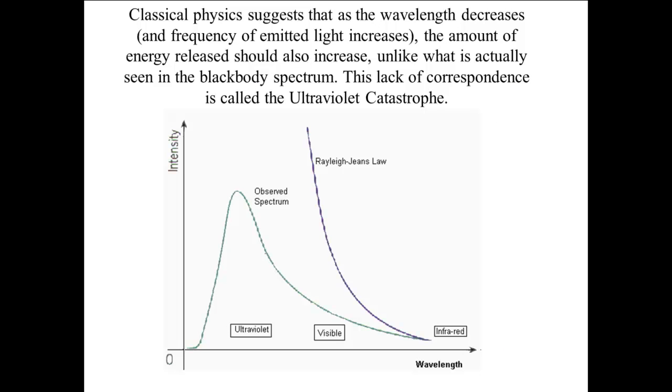Classical physics suggests that as the wavelength decreases and the frequency of emitted light increases, the amount of energy released should also increase. This is the graph labeled Rayleigh-Jeans law. Notice that at higher frequencies and energies, the Rayleigh-Jeans law does not look at all like the actual black body spectrum. This lack of correspondence is called the ultraviolet catastrophe. This is a huge problem.